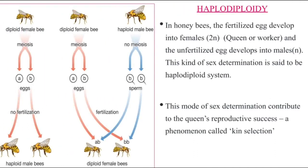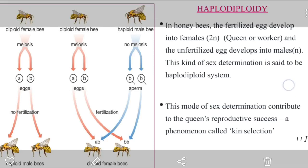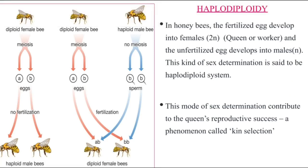Haplodiploidy is a type of mechanism seen in ants, wasps, and bees. In insects like honeybees, this mechanism is common. In haplodiploidy, the fertilized egg develops into a female, which has the diploid number of chromosomes — two sets, denoted as 2n.